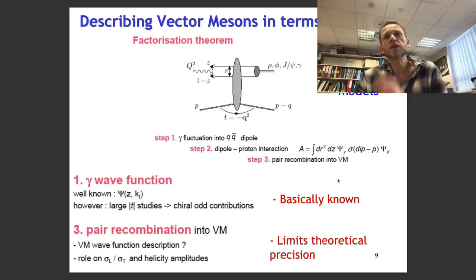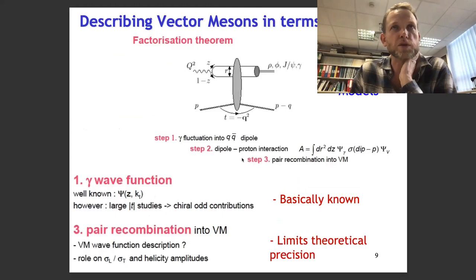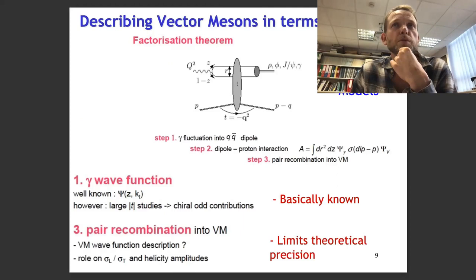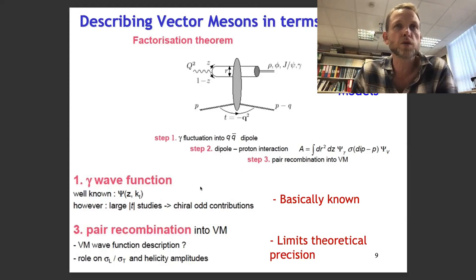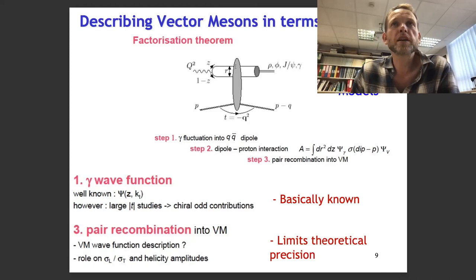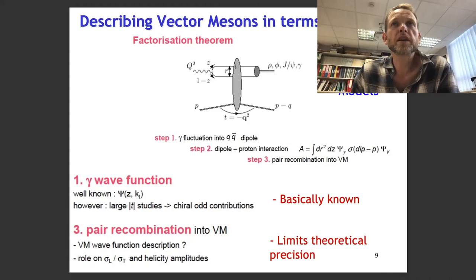How do we describe these things in terms of partons? Let me use the dipole model way of thinking about these things. The picture is that the photon dissociates into a q q-bar pair — the photon fluctuates into a q q-bar dipole. Then that dipole somehow interacts with the proton, in a way that keeps the dipole intact afterwards, and then reforms into a vector meson. There's a three-step factorisation: first, the photon fluctuating into the dipole — the photon wave function is basically known, we understand QED. The recombination at the right-hand side requires the vector meson wave function, so that limits theoretical precision. The really interesting physics is in the dipole-proton interaction.